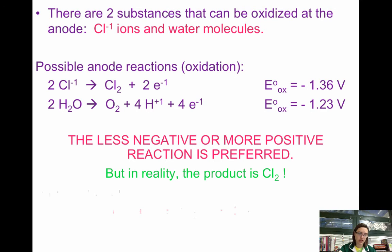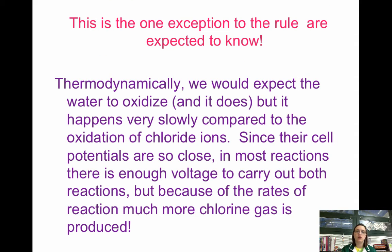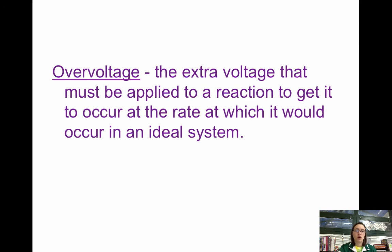Why does chlorine form instead of oxygen? There's one exception to the rule we need to know. Thermodynamically, we would expect the water to oxidize, and it does, but it does so slowly compared to the oxidation of chloride ions. Since their cell potentials are so close, the battery provides enough voltage to carry out both reactions. But because the rates of reaction are so different, you actually see chlorine gas being produced. This is called over-voltage — over-voltage is caused by the difference in reaction rate. It's the extra voltage that has to be applied to a reaction to get it to occur at the rate we want.